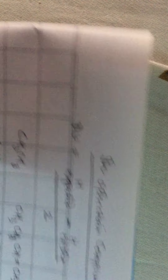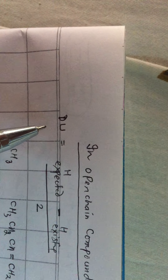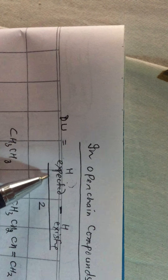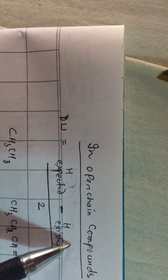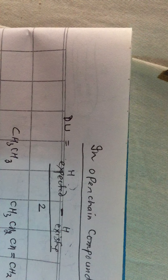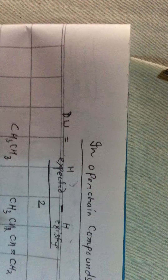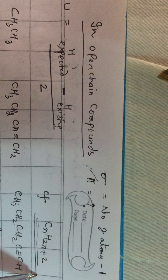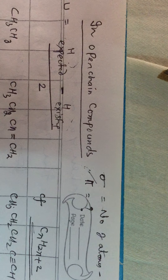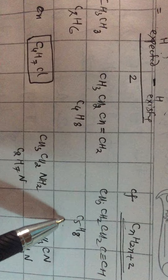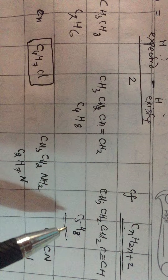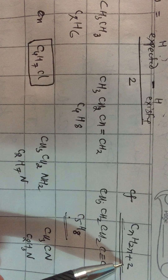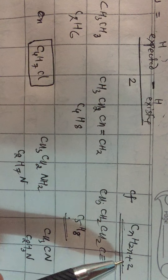How to work out the degree of unsaturation? Look at the formula of the molecule. The formula is: (expected number of hydrogens minus existing number of hydrogens) divided by 2. The expected number of hydrogens is obtained from the comparable alkane formula CnH2n+2. For example, for a molecule with 5 carbons, CnH2n+2 gives C5H12.